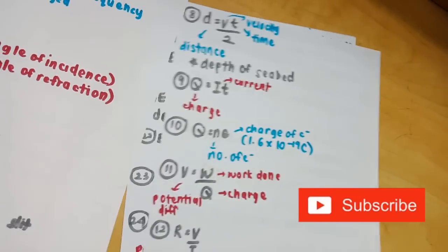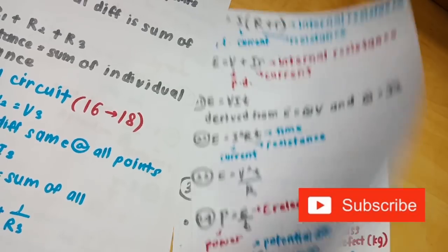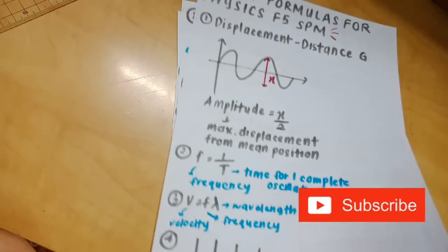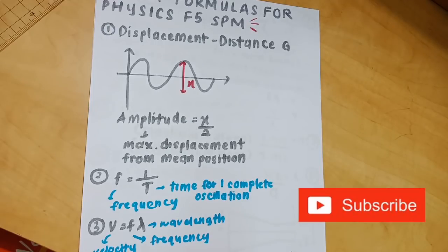So that was the list of formulas for Physics Form 5 SPM. A lot of you guys have been requesting this video after I did the Form 4 one. I hope this video was useful. Remember to give this video a like and remember to subscribe down below if you haven't already. Thanks for watching and I'll see you guys next time.